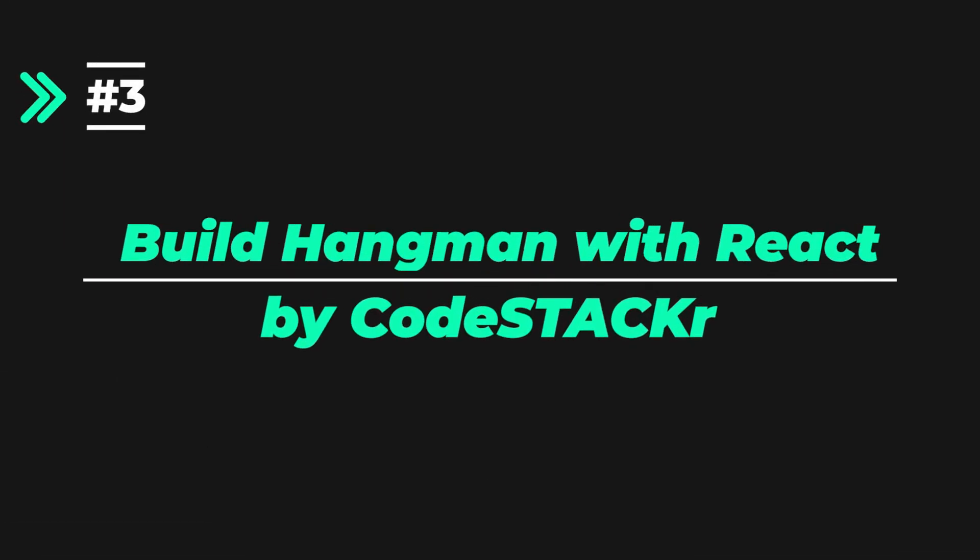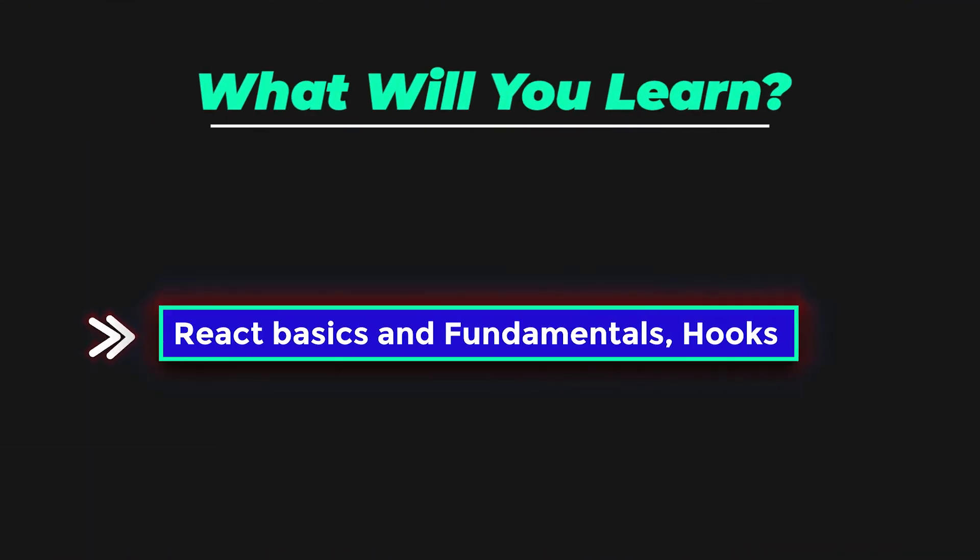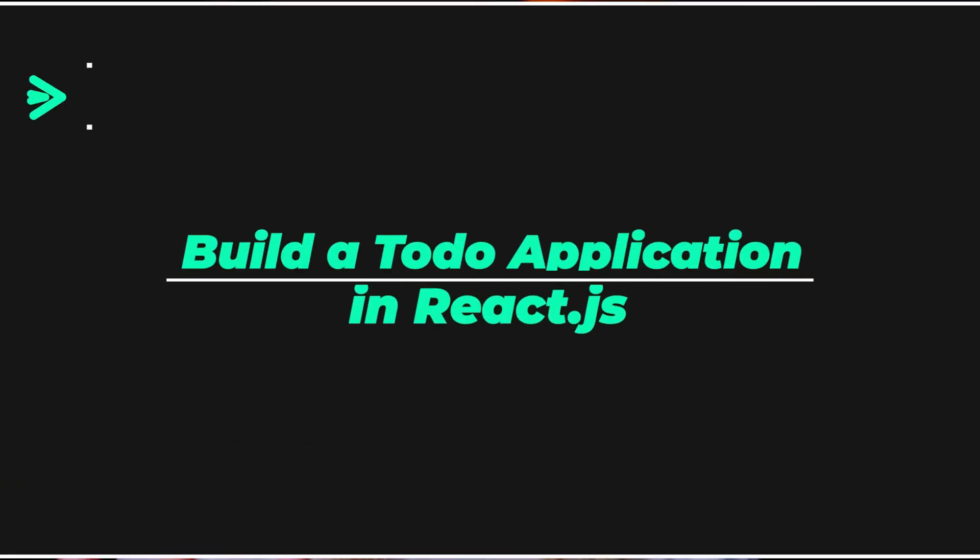The third project idea is actually a game — I know you're excited for that! A lot of project ideas that most people recommend are not games; they're mostly just practical applications. So project idea number three is 'Build Hangman with React' by Coder Stacker. This is a really cool tutorial where he shows you how to create a Hangman game using React with hooks. You should really force yourself to understand React hooks and how you can use them to build custom things for your application.